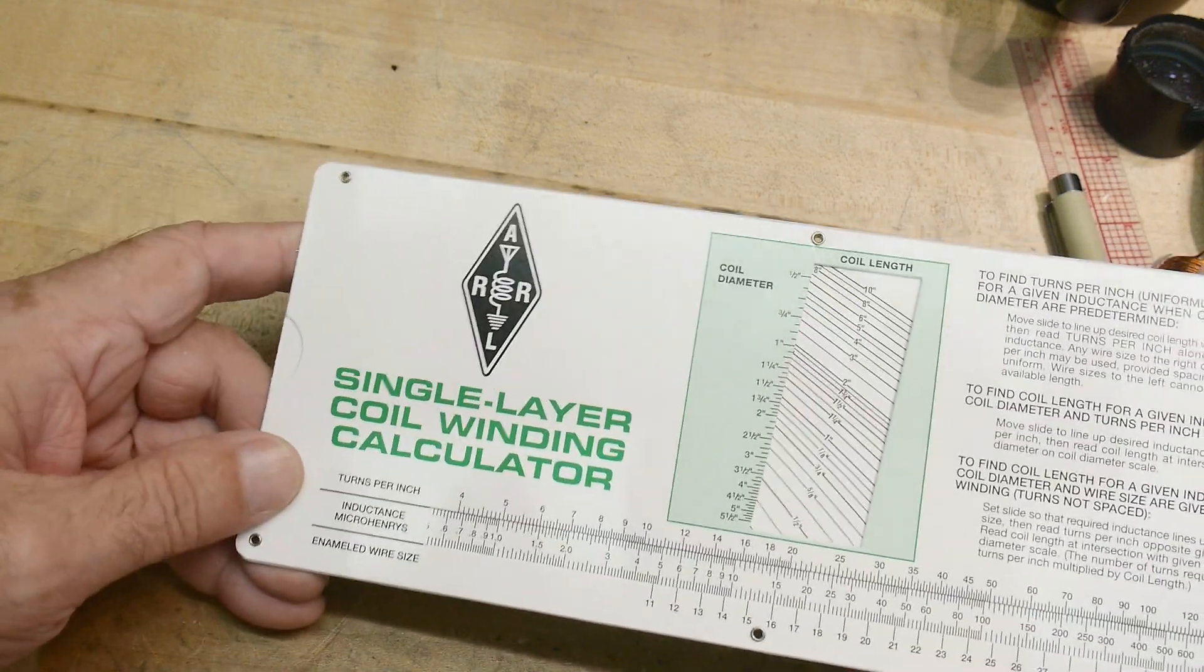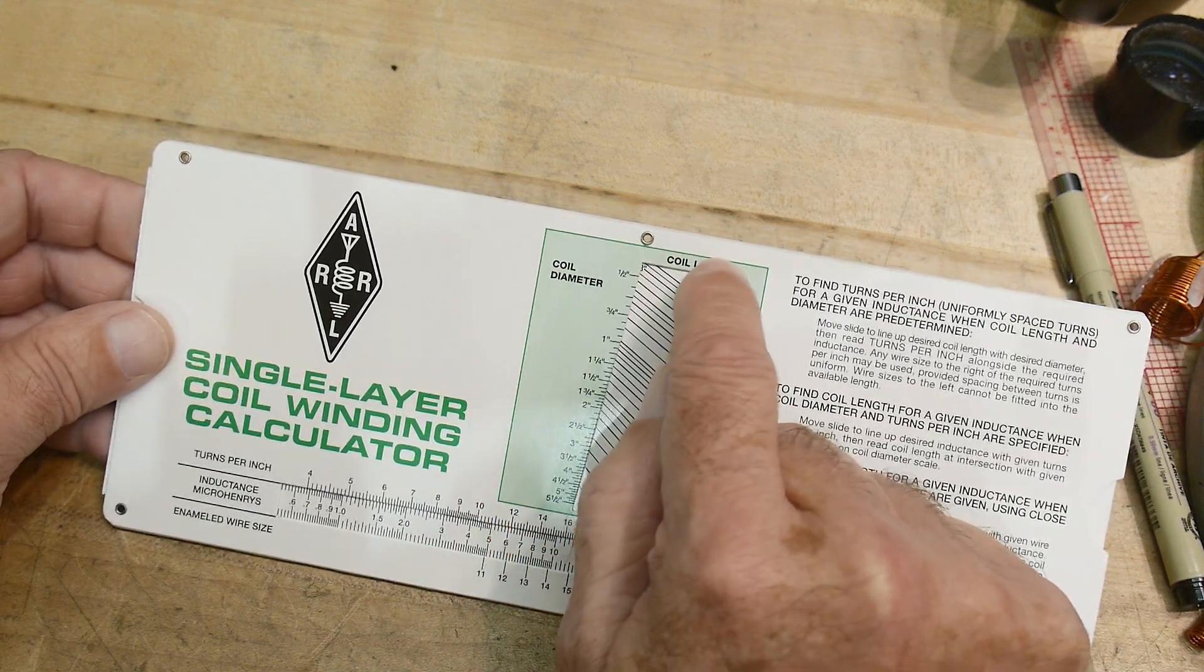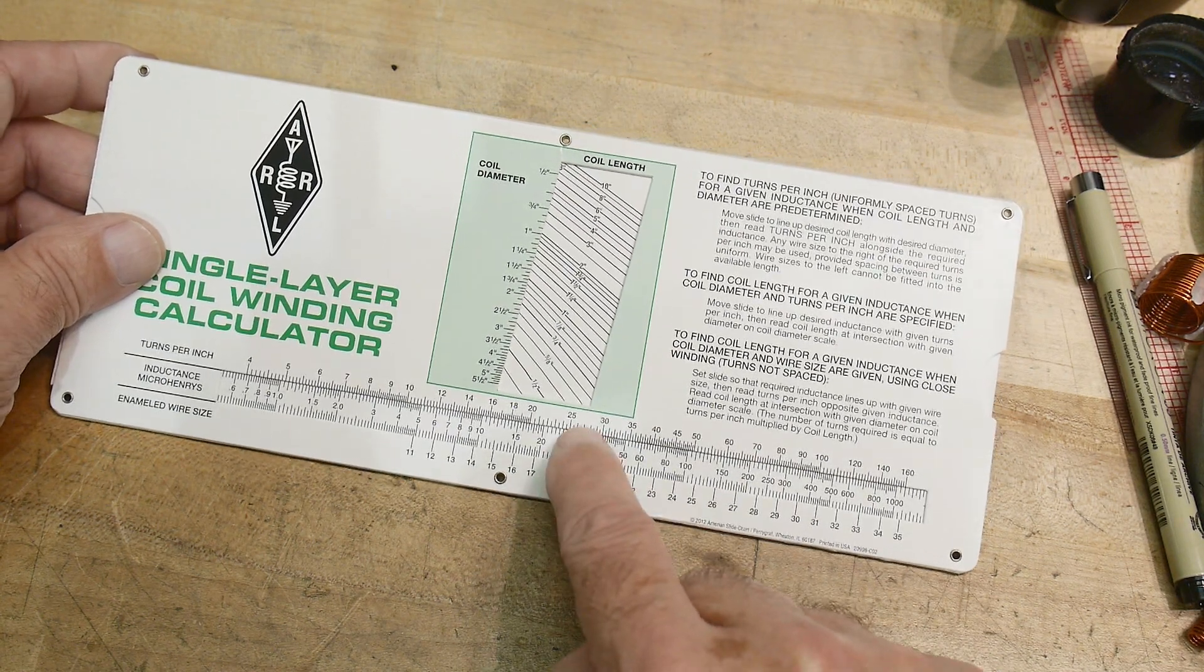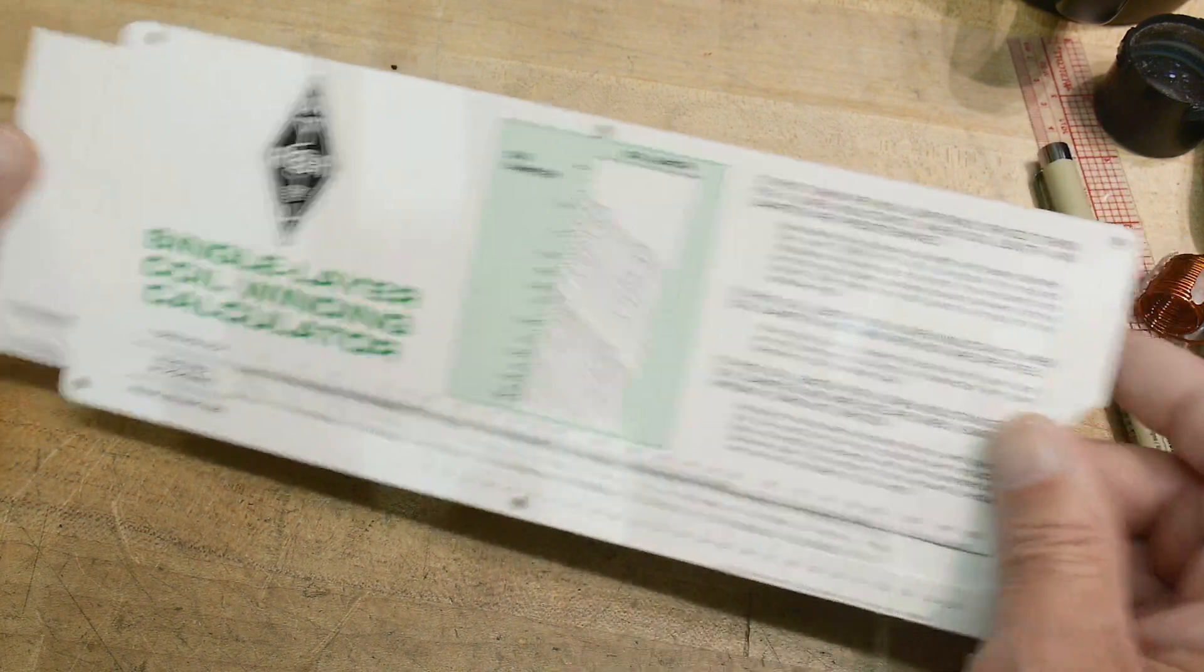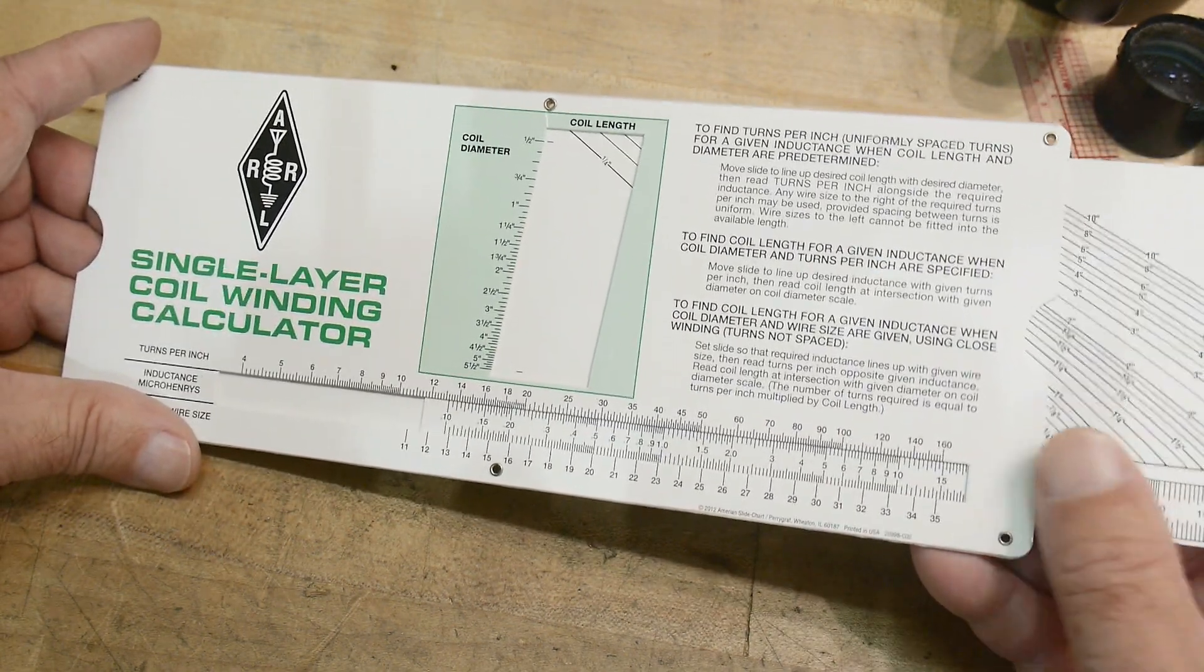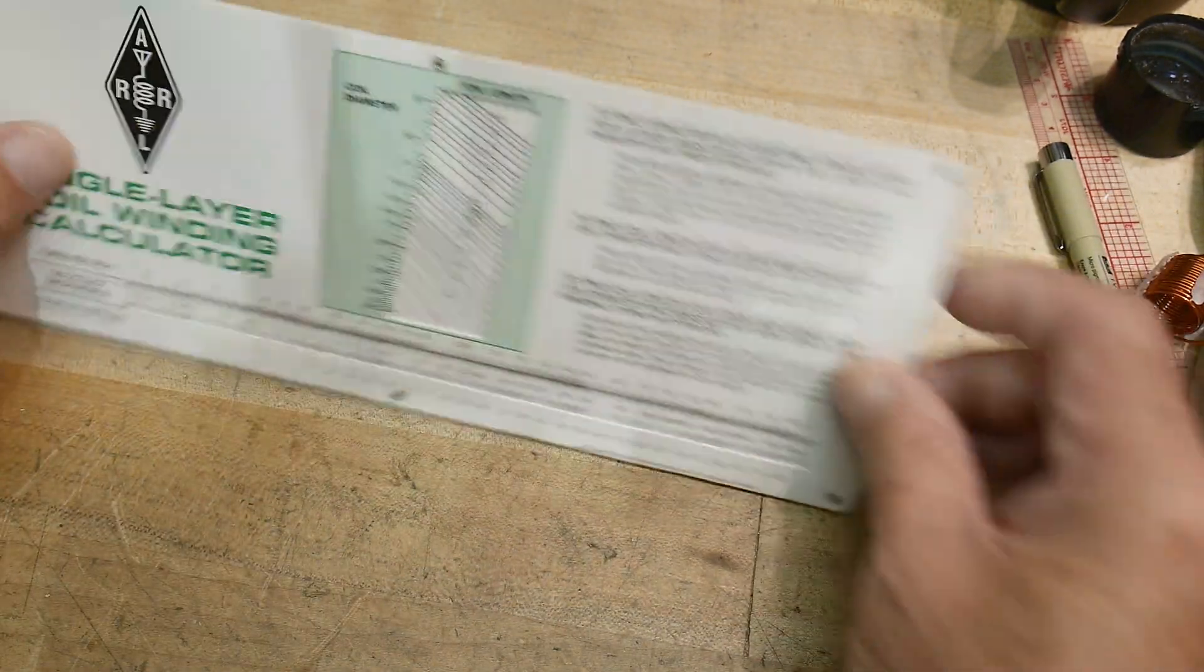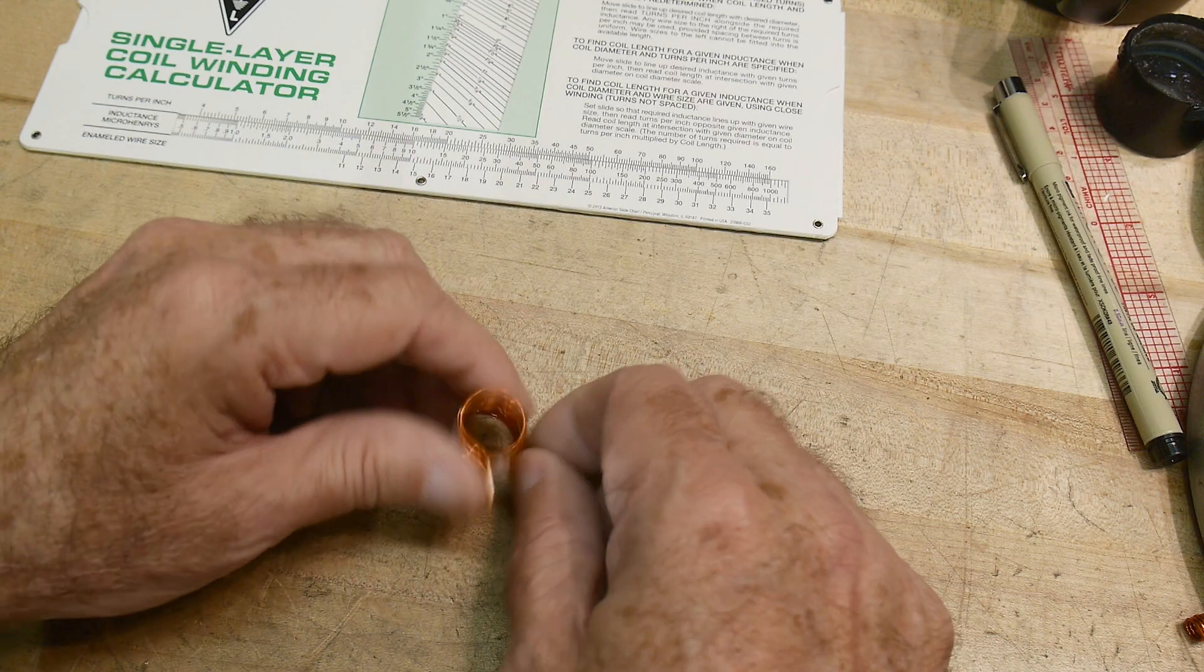Single layer coil winding calculator. So you have coil diameter and coil length, and then you have turns per inch, micro Henrys and enameled wire. So we had 19 gauge wire. It told us that we would end up having about 26 turns per inch. And then you get a particular inductance. So we were getting about 0.2 on this little one. And so it's kind of off the chart for this one. So this one is not really useful for super small things. But I made a bigger one, so this is more where this chart would work better.